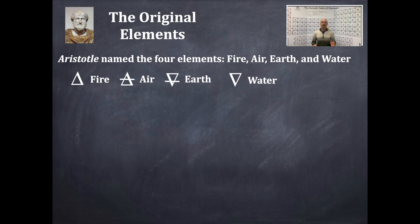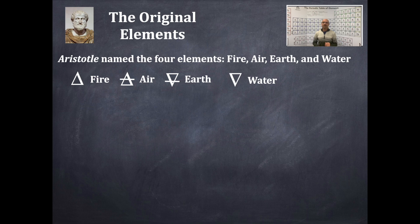However, none of these four are actually elements. Fire is not an element at all. Air is a mixture, not an element. Earth is most certainly not an element either. And water is a compound composed of elements. So Aristotle didn't quite have it correct.